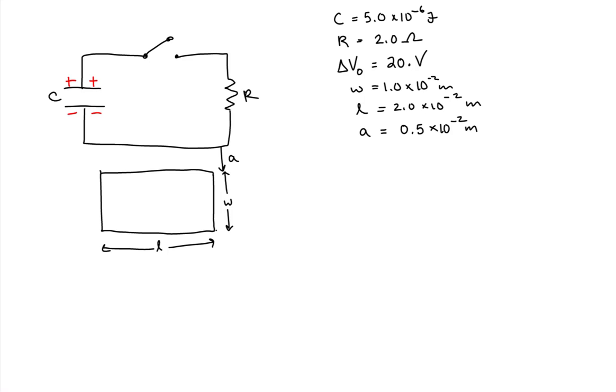Now we're told that this bottom loop has a resistance. And the resistance we are given is 0.050 ohms. To remind myself that this bottom loop has a resistance, I'm just going to add a resistor symbol in the loop and I'm going to label it as R sub L for the resistance of the loop.